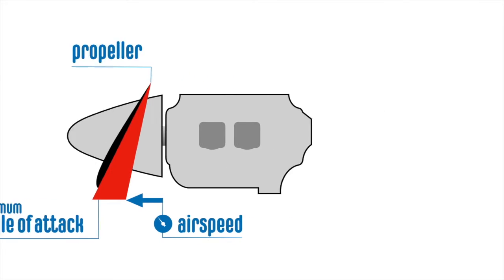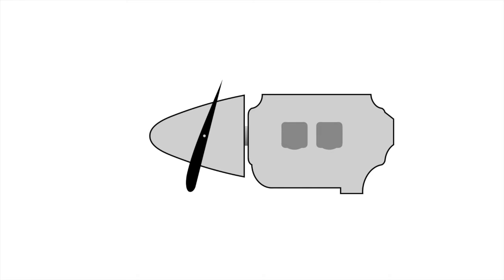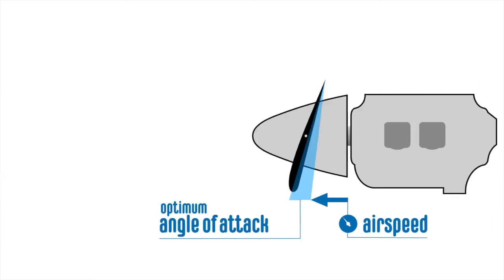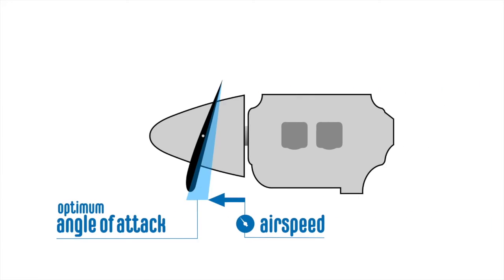The variable pitch propeller was developed to address this problem. Its blade angle can be changed from fine to coarse or any position in between. On modern aeroplanes this is known as a constant speed propeller. It allows the propeller blade to maintain the optimum angle of attack as the airspeed increases and decreases.